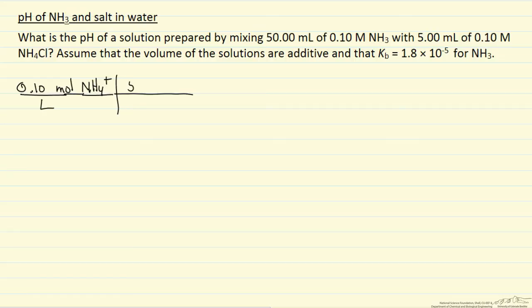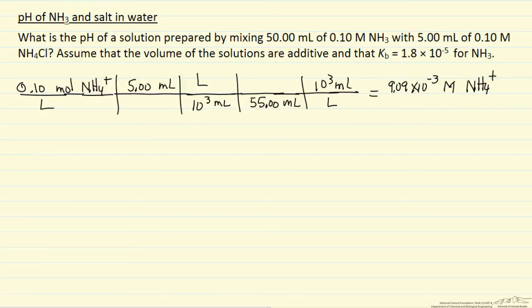So we have 5 mL, because the units 10 to the third mL is a liter. Now we have the number of moles of the salt. So this number of moles is going to be finally in 55 mL, and again, keep the units correct, 10 to the third mL is a liter. Now if we look at units and cancel units, what we're going to end up with is the concentration in moles per liter or molar, so 9.09 times 10 to the minus third molar of ammonium ion from the salt.